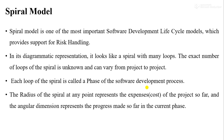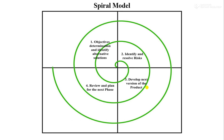The exact number of loops of this spiral is unknown and can vary from project to project. In this diagrammatic representation, the spiral model is divided into four quadrants: quadrant number one, quadrant number two, quadrant number three, and quadrant number four. This model is called the spiral model because the progress and the cost are represented in the form of a spiral.